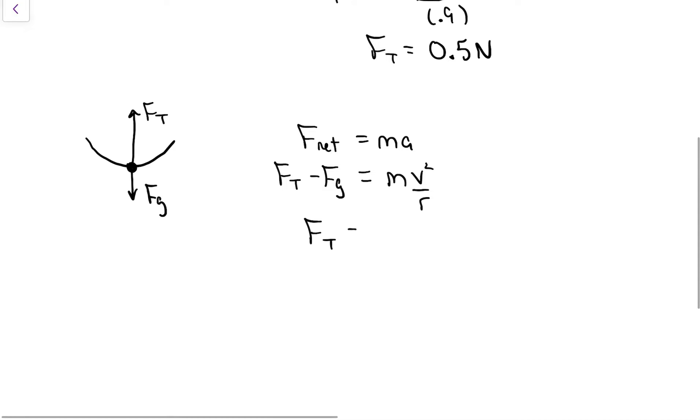When I flip things around to solve for tension, this time when I move the mg to the other side, it's got a positive. We're going to get a larger tension at the bottom than we did at the top. If we plug in the numbers, you can see for yourself, solving for that I got a tension of 1.7.